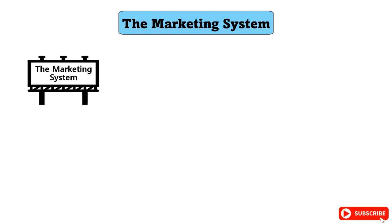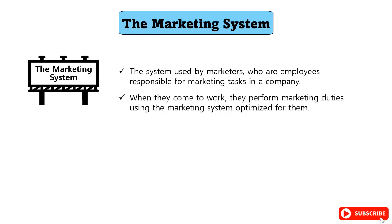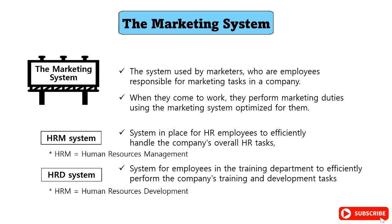A marketing system refers to the system used by marketers — employees responsible for marketing tasks in a company. When they come to work, they perform marketing duties using the marketing system optimized for them. Just as there is an HRM system for HR employees and an HRD system for the training department, marketers also have a marketing system in place.